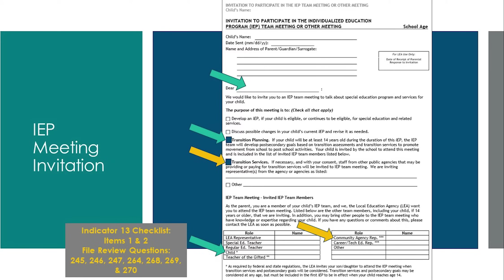Items we've just discussed relate to Indicator 13 Checklist Items 1 and File Review Questions 245 and 247, which address inviting the student and documenting that transition planning and services are being addressed for age-appropriate students. Indicator 13 Item 2 and File Review Questions 246, 264, 268, 269, and 270 have to do with clearly documenting agency involvement at the time of IEP meetings.